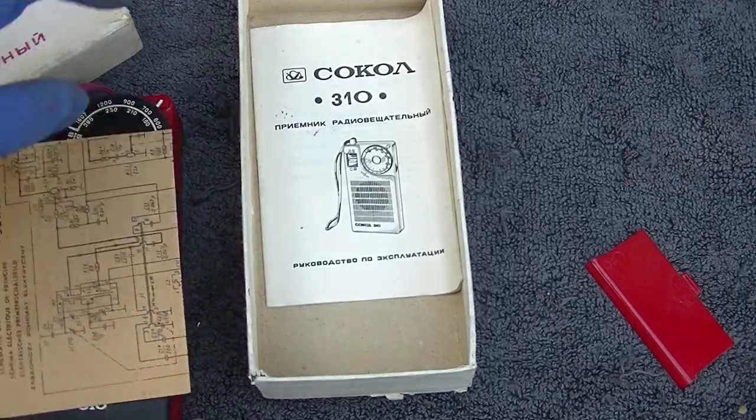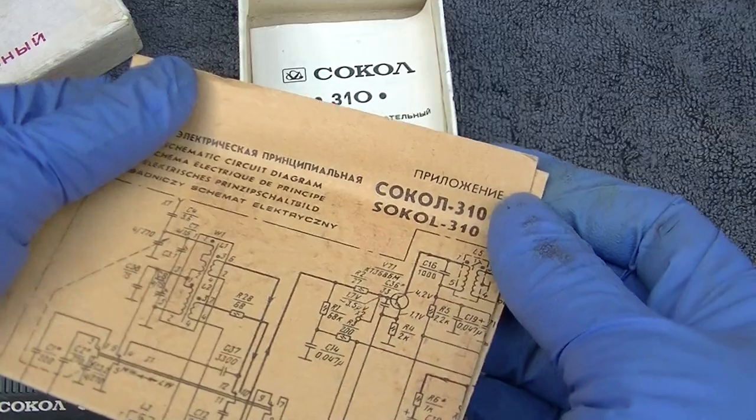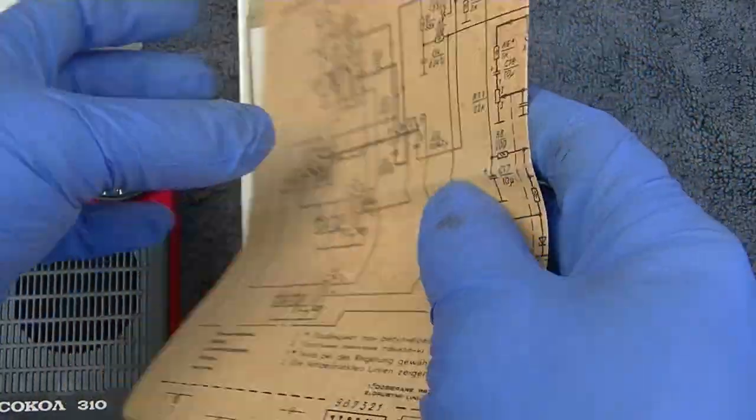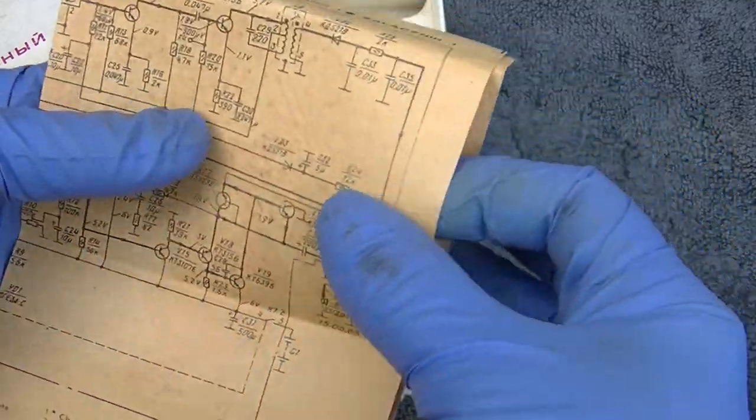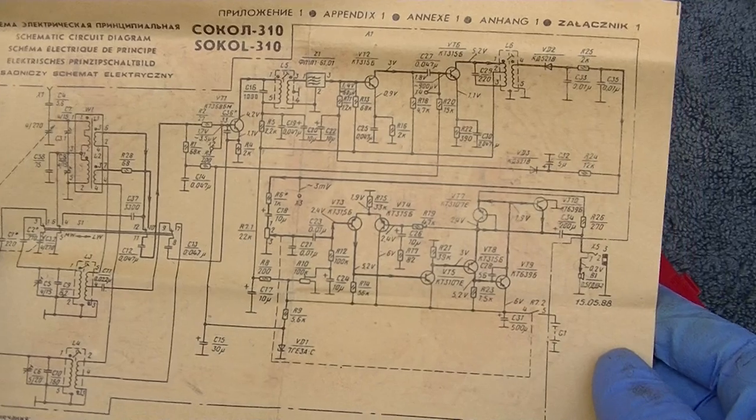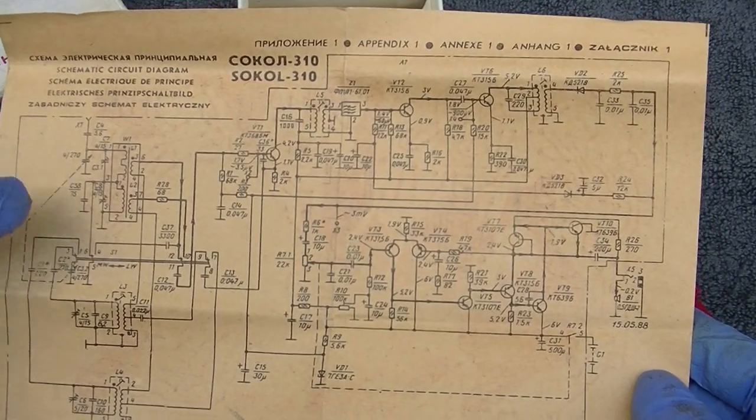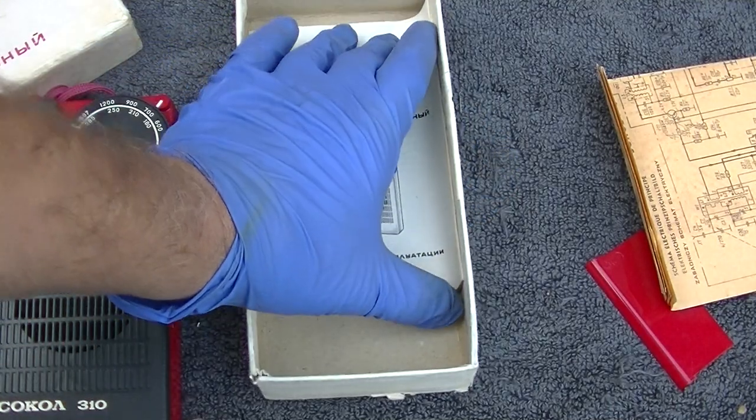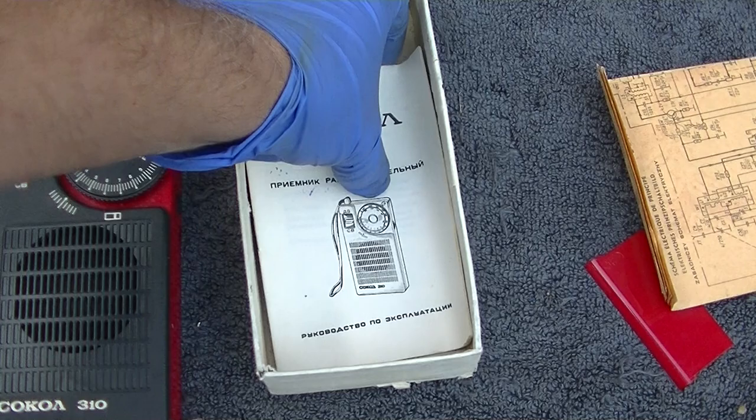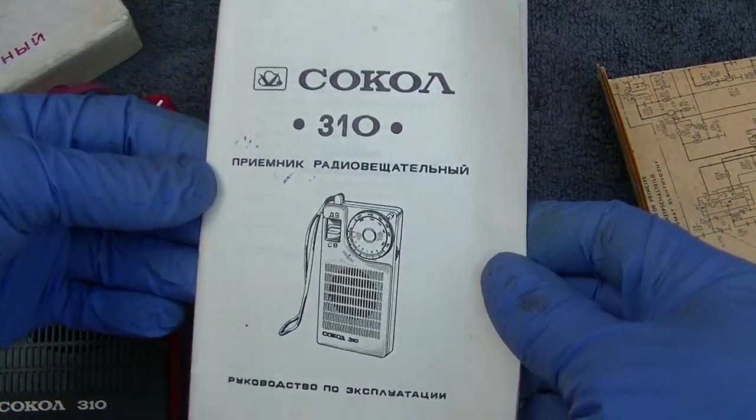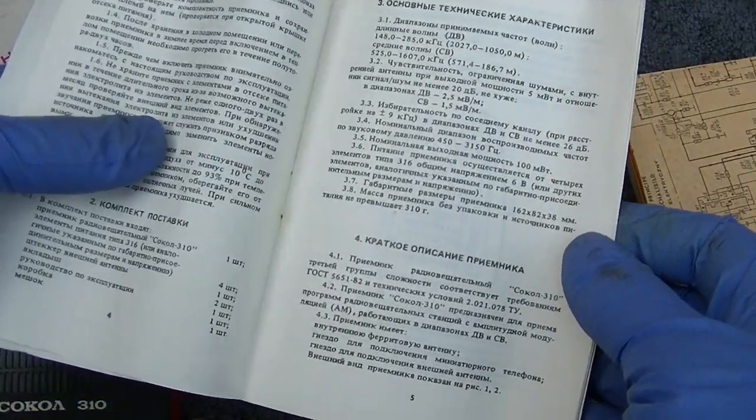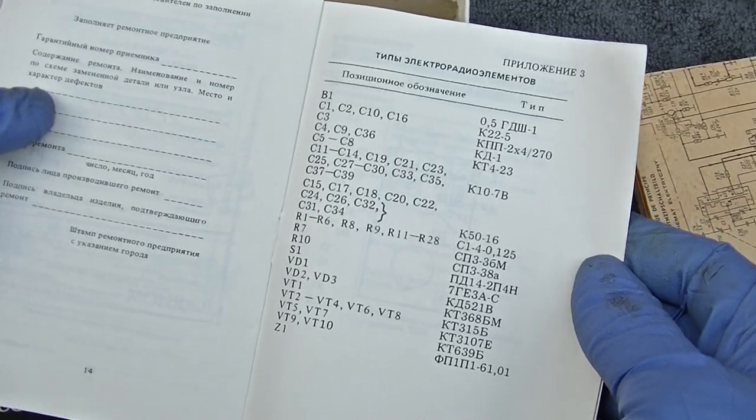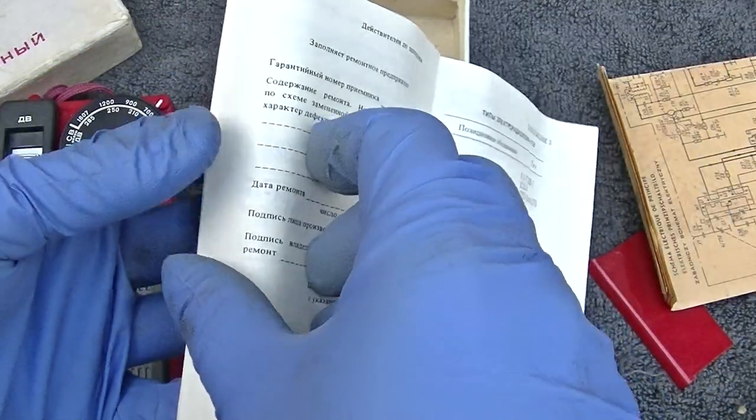Like most all of the Soviet stuff, the nice thing about it is schematics and diagrams and service parts and parts manuals are all easily available. Easy to find service data on these USSR made Soviet era stuff. You can pick this stuff up off of eBay relatively inexpensive. The user manual has a parts list in it.